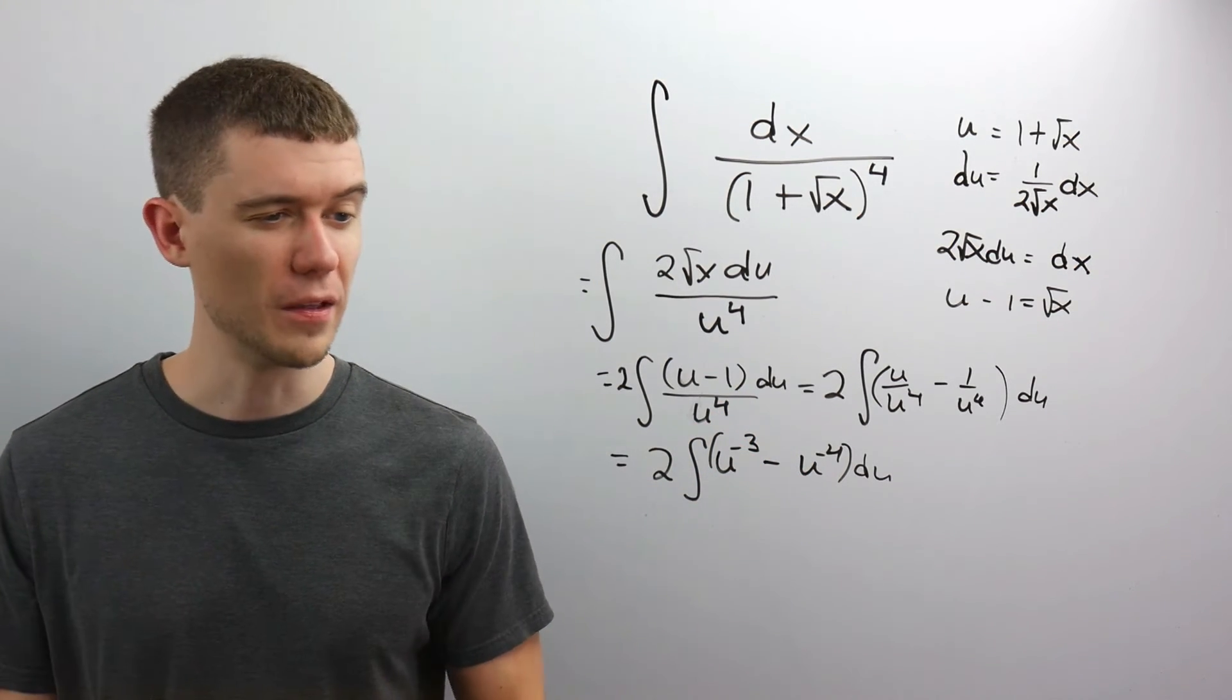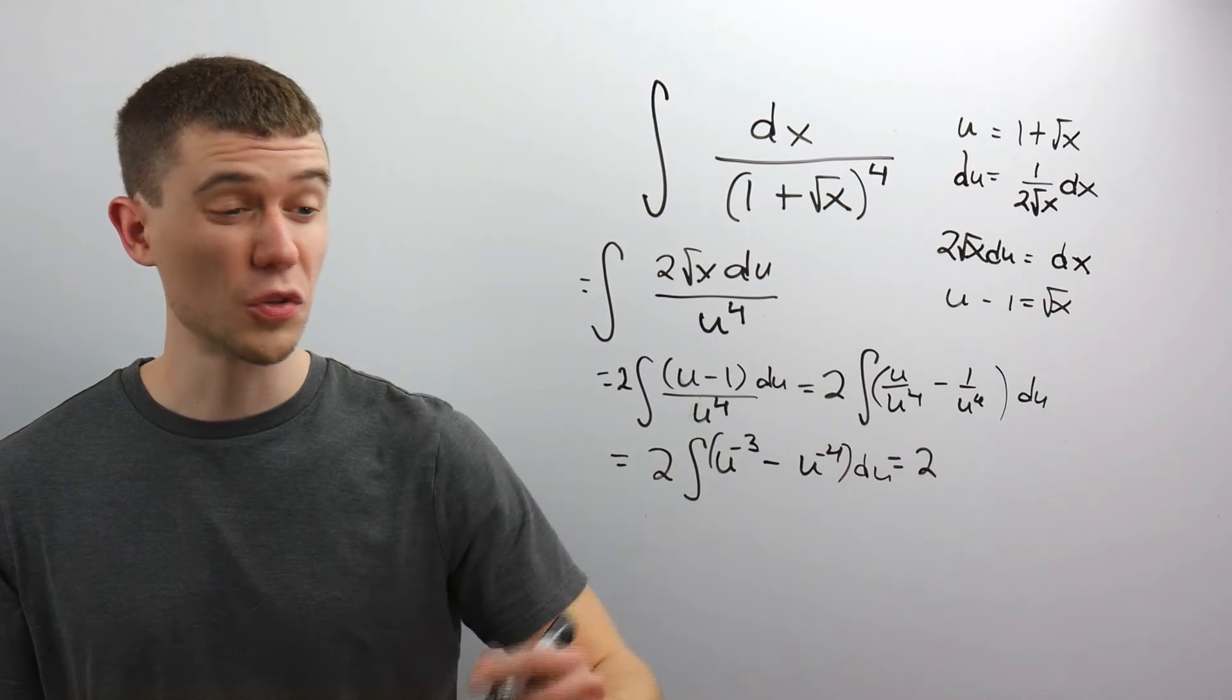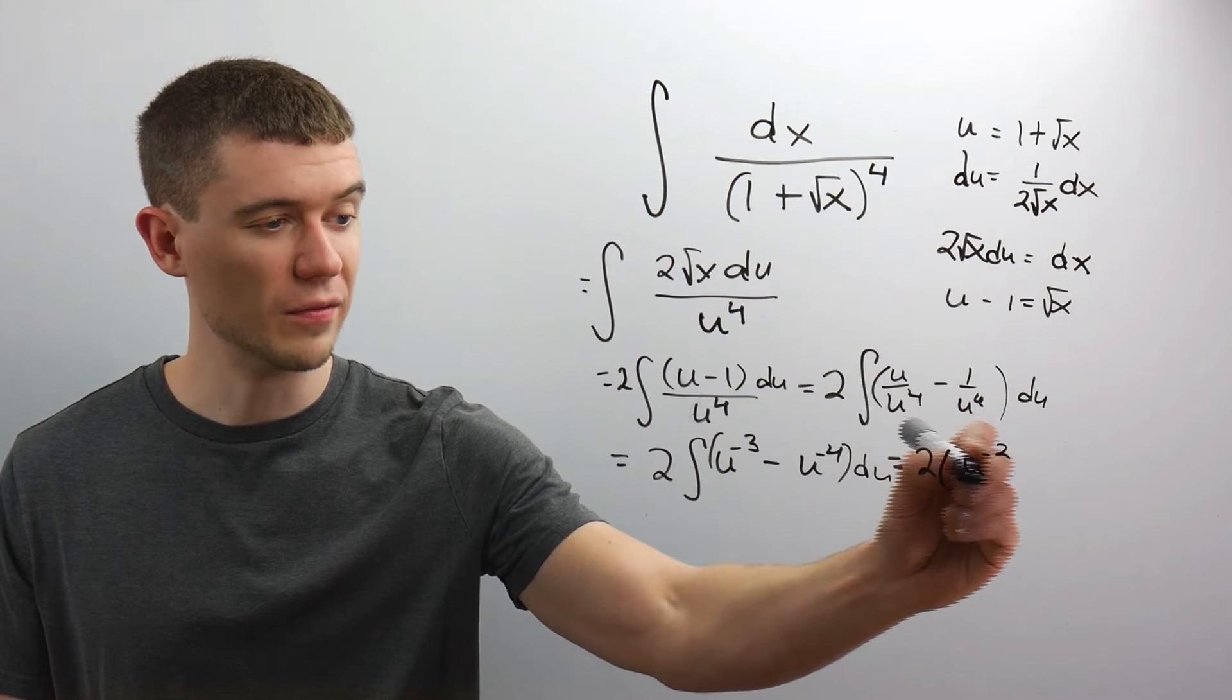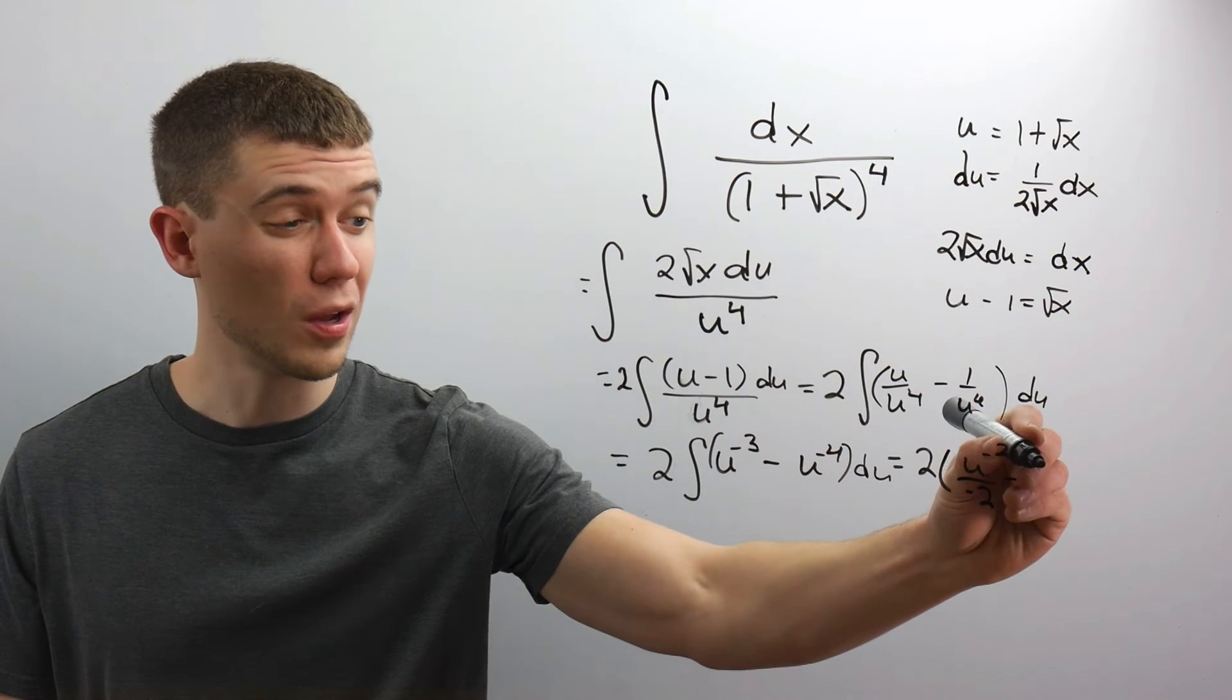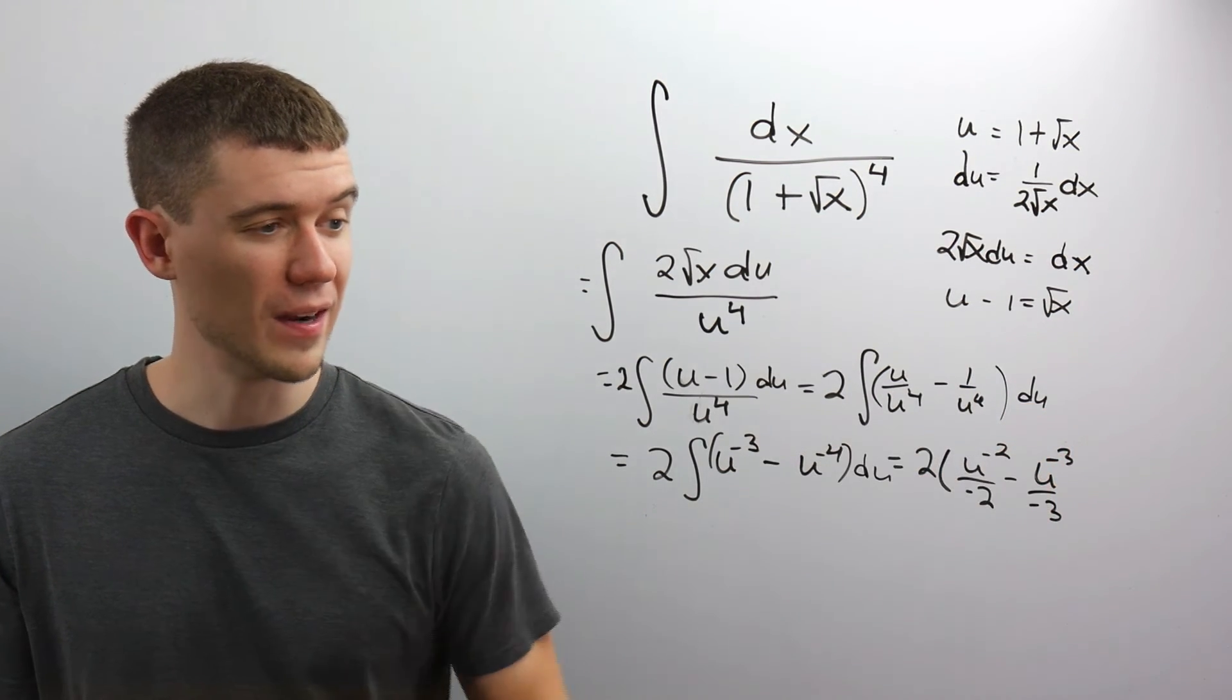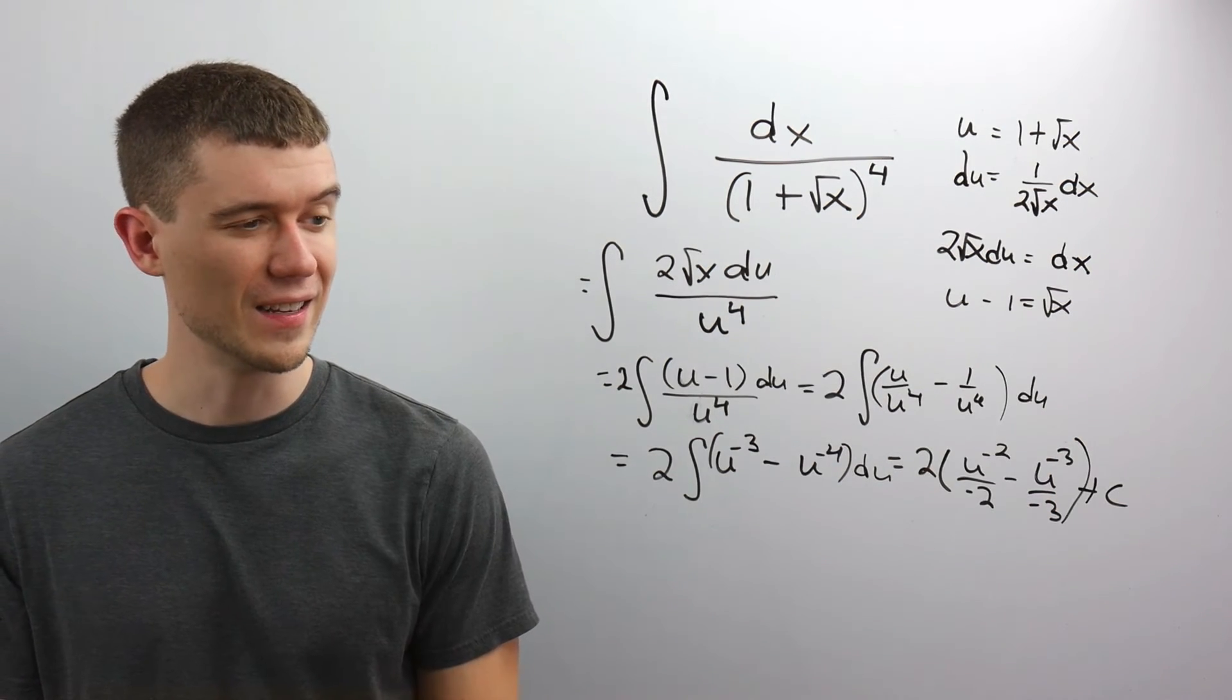Add 1 to the power. Divide by the new power. So I'll do just that. Minus 3 plus 1, that's a minus 2. I divide by the new power. Minus 4 plus 1, that's minus 3. Divide by minus 3. Every good indefinite integral deserves a plus C at the end.